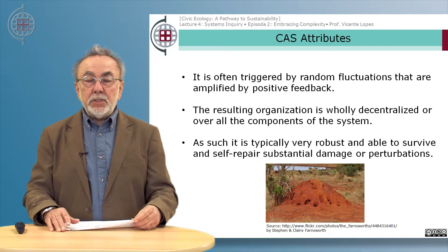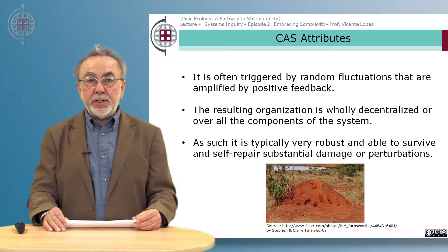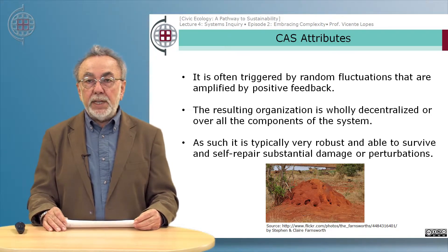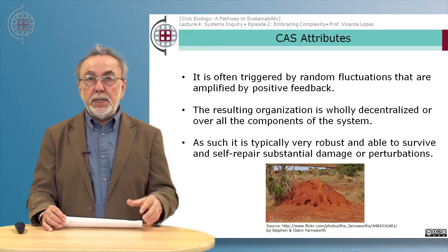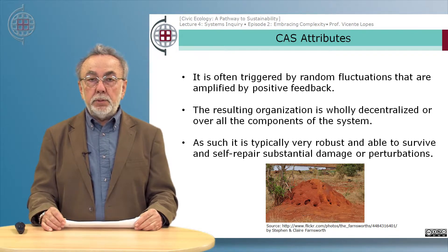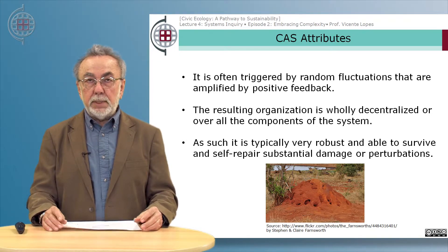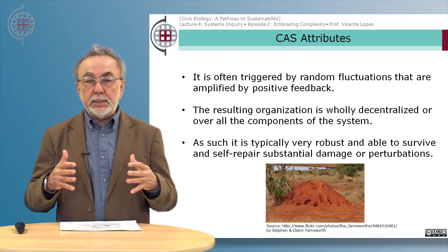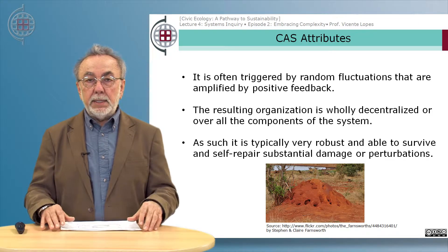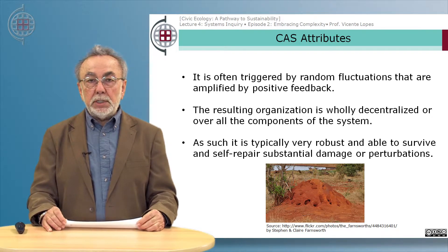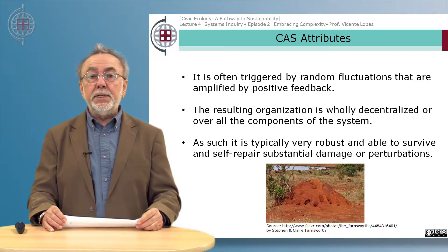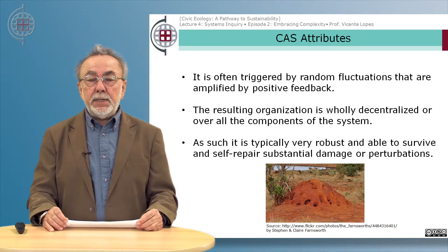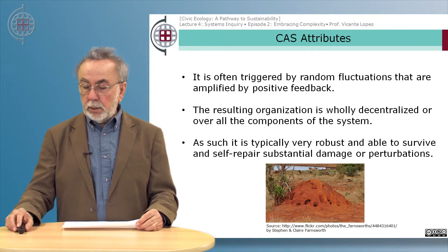Our role is more in trying to influence conditions — although we don't necessarily know what the consequences of that intervention will be — but we try to create those conditions that may or may not, through a process of self-organization, create a new state. Self-organization is often triggered by random fluctuations amplified by positive feedback mechanisms. The resulting organization is wholly decentralized over all the components of the system, making it typically very robust and able to survive and self-repair substantial damage or perturbations.